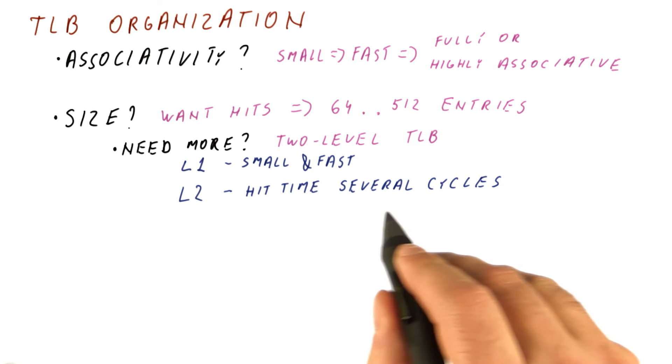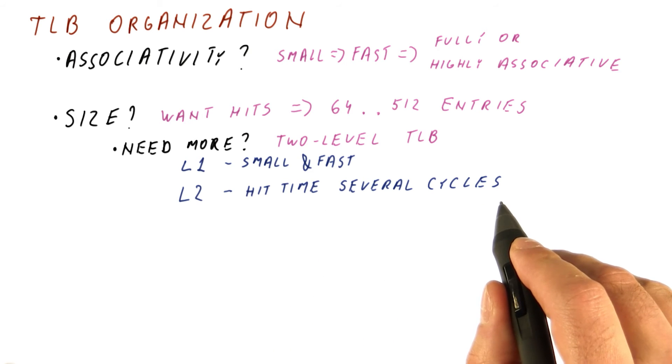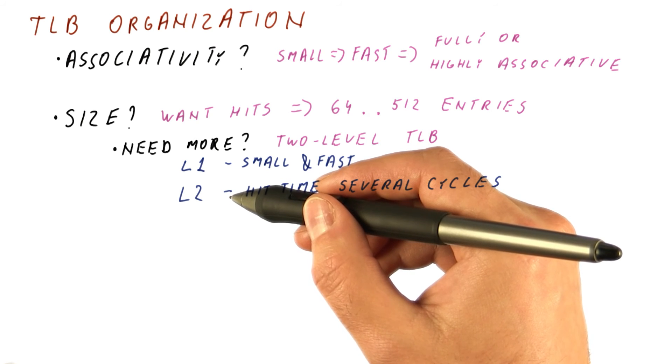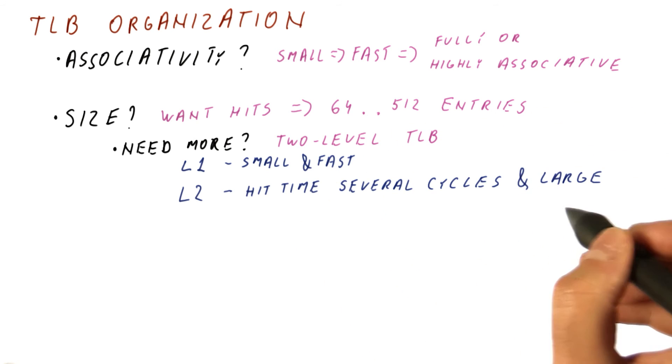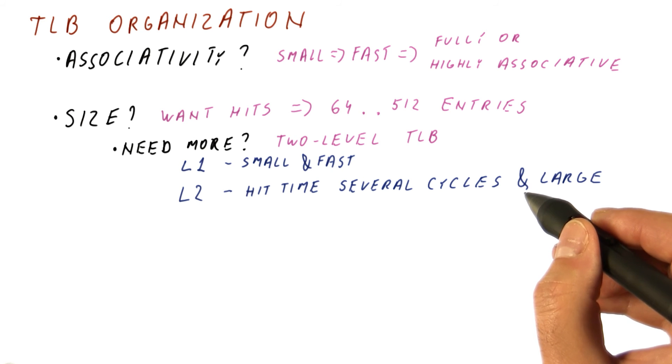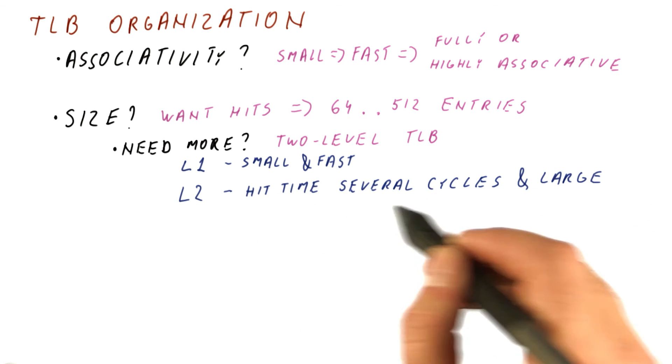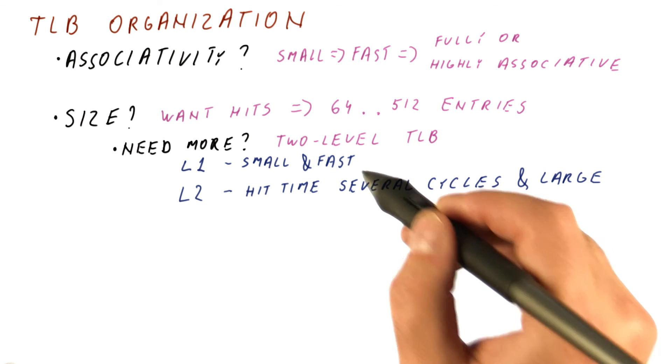It has a hit time that is several cycles, so it's significantly slower than L1, but still way faster than going through memory and doing the translation. And it is large. It can be several thousand entries, because with several thousand entries we can still support relatively good hit times, but not a single cycle time.